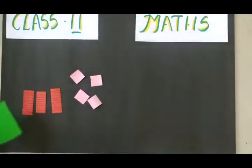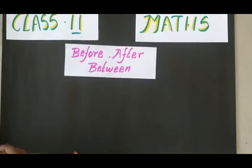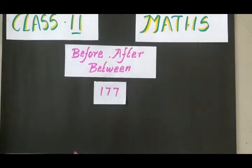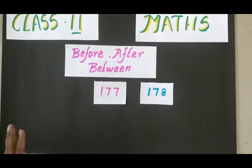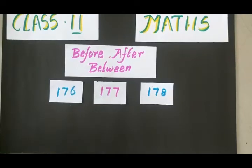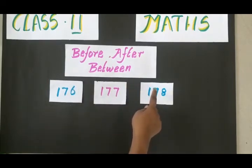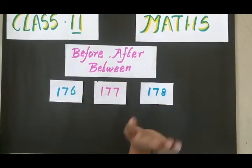Next we are going to learn before, after, and between numbers. Here I have the number one hundred and seventy-seven. To find the after number, we are going to add one to the given number, so one hundred and seventy-eight comes after 177. To find the before number, we reduce one from the given number, so one hundred and seventy-six comes before 177. So 177 is placed between 176 and 178.